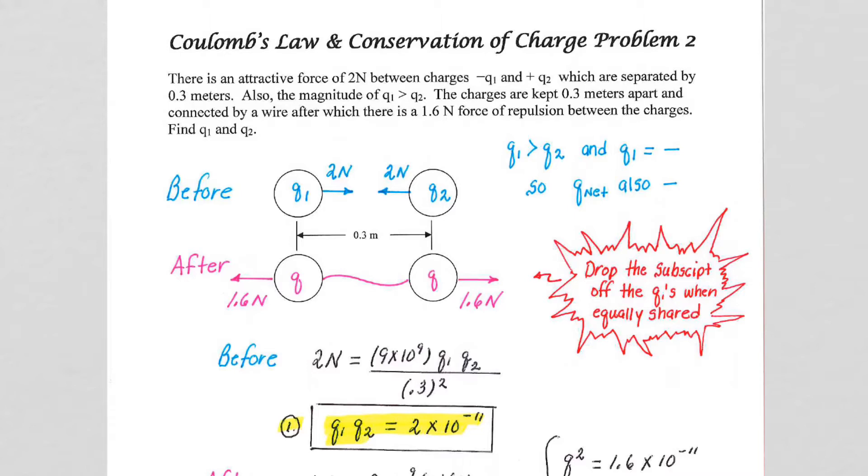We're told that there's an attractive force of 2 newtons between two charges Q1 and Q2. We're told that Q1 is negative, Q2 is positive, and that they're separated by 3 meters.